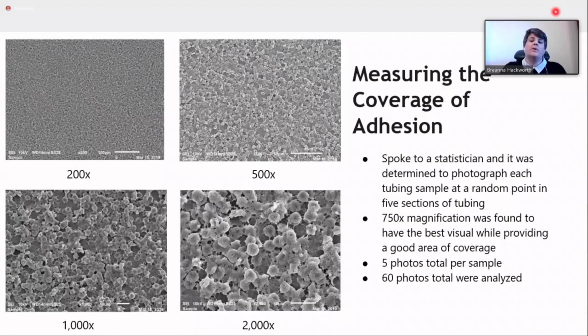So how did we measure the coverage of adhesion? If you look at the images on the left, it's a little bit overwhelming. It was a little bit difficult to be able to measure this. We spoke to a statistician at Midwestern, and she helped us determine that a 750x magnification would be a good magnification to be able to quantify. But also, if you took five photos down the length of the tubing, it would give you a good idea of the coverage throughout that whole tube. So five photos per sample were analyzed, and in total, 60 photos were analyzed.